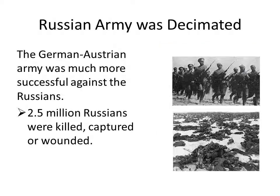The Russian army was decimated. The Germans and Austrians were very successful against the Russians initially. Two and a half million Russians were killed, captured, or wounded — one of the largest groups of men ever to die or be injured in a war. It's just mammoth when you think of those numbers.